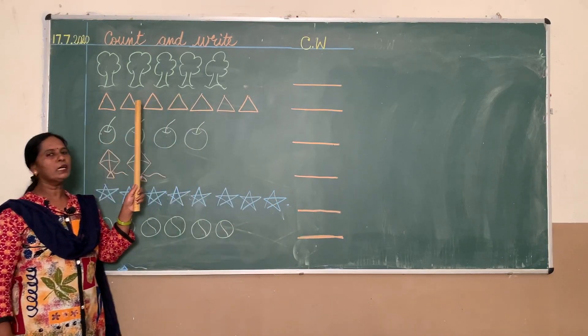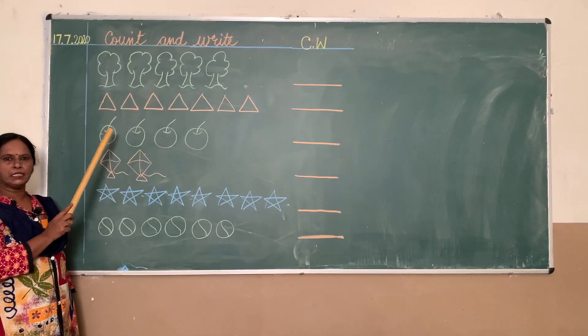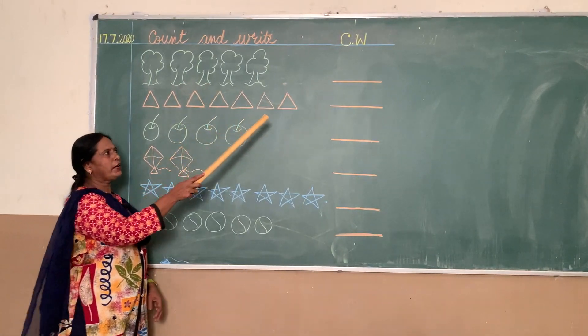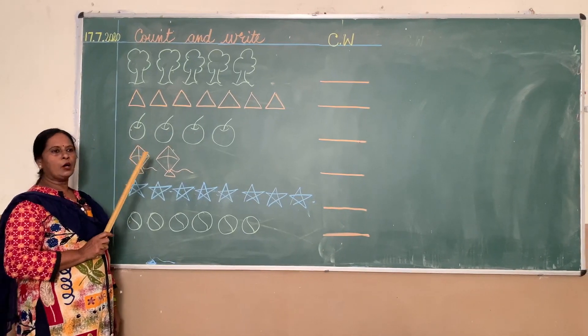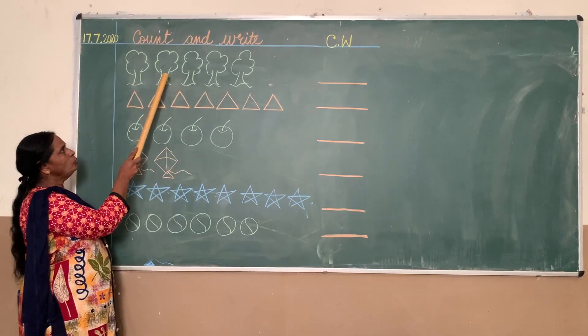And now let's start with counting. What are these? These are trees. You are going to count the number of trees and write the correct number here. Now start. Come on, now start counting along with me: one, two, three, four, five.